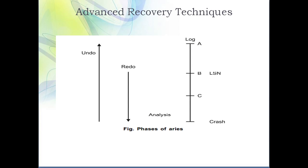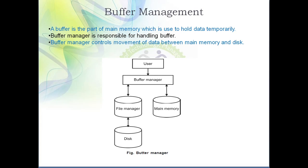This is also shown with the help of a diagram. Point B is the LSN from which the redo operation starts. During the redo operation the log record is scanned in a forward direction, whereas in the undo operation the log record is scanned in a backward direction. This diagram represents the working of the recovery algorithm called ARIES.